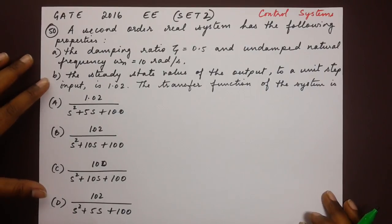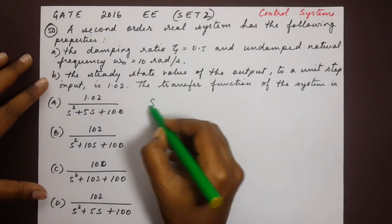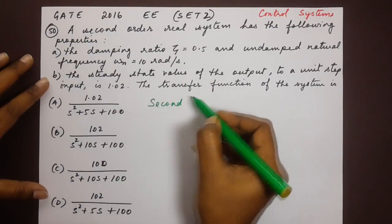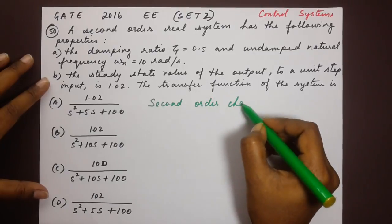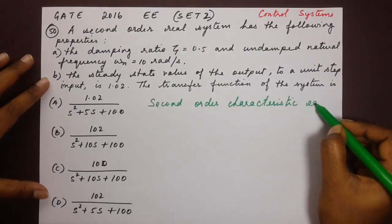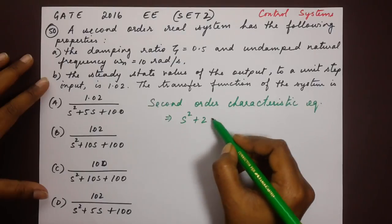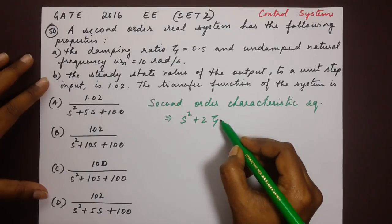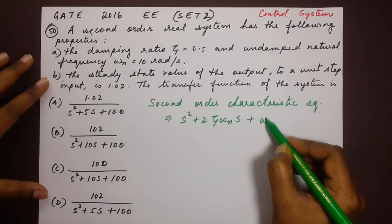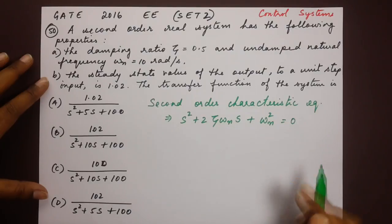We start by writing down the second order system characteristic equation, which is given in the form of s² plus 2ξωns plus ωn² equals 0. This is our second order characteristic equation. It is a general equation. It will be good to remember.